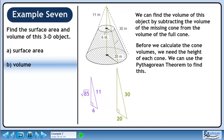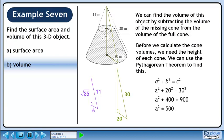Now we'll draw the triangle for the full cone. Start with a squared plus b squared equals c squared. Plug in 20 for b and 30 for c. Simplifying gives a squared equals 500, so square root both sides to get a equals the square root of 500.